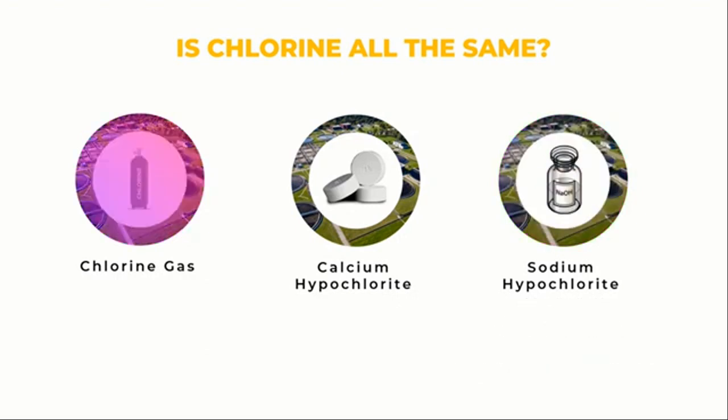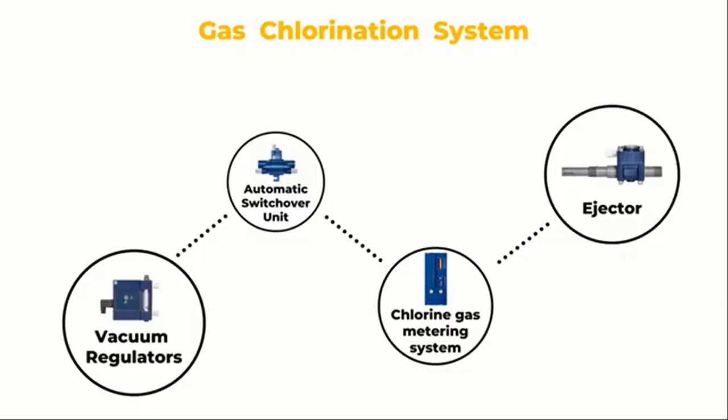Currently, chlorine gas is used by about two-thirds of drinking water systems, so we will describe the chlorine gas dosing mechanism in this video. The vacuum regulator, the automated switch cover, the chlorine gas metering system, and the ejector are the main elements of a gas chlorination system.